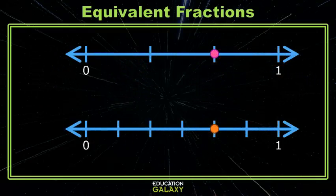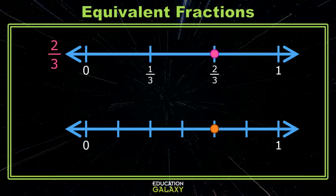Here I have two number lines. They both cover the same space from zero to one. The number line on top is cut into three pieces. The dot's two spaces over, and that represents the fraction two thirds.